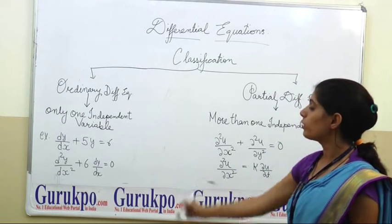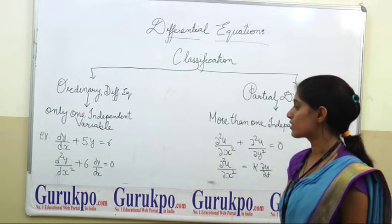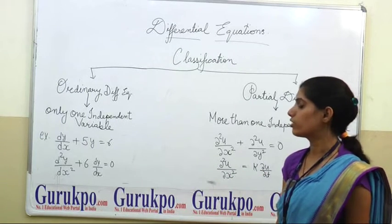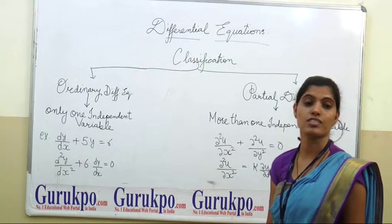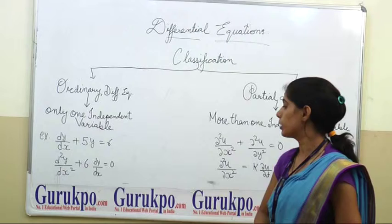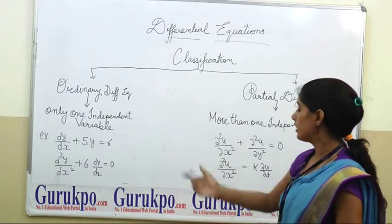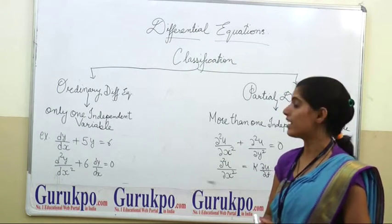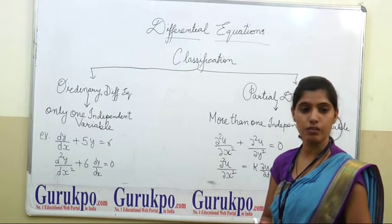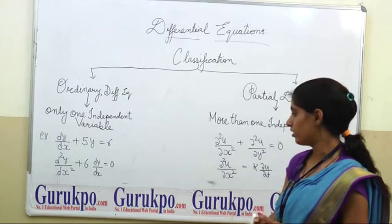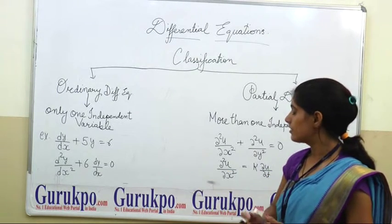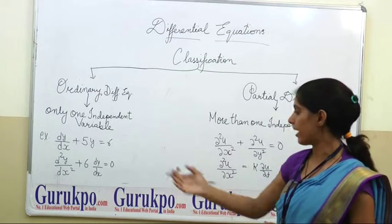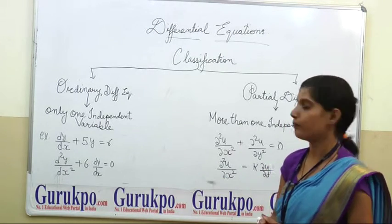For example: dy/dx + 5y = 6, and the second example, d²y/dx² + 6 dy/dx = 0. Here y is the dependent variable and x is the independent variable in both equations.